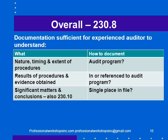There is an overall documentation requirement in 238: documentation sufficient for an experienced auditor to understand the nature, timing, and extent of procedures — presumably documented in an audit program — the results of the procedures and evidence obtained, also probably in or referenced to an audit program, and significant matters and conclusions. That's probably best in a single place in the file rather than randomly spread throughout, because if you're documenting significant matters in random places it'll be very difficult for the partner or reviewer to find them, understand them, and come to conclusions about them.